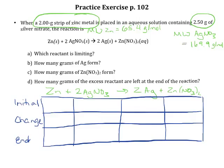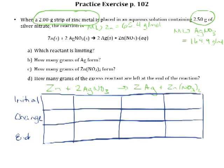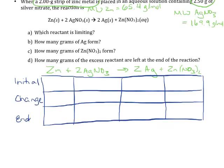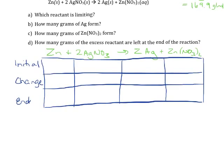Now we're ready to start filling in information, but remember that we cannot put grams in this ICE table. We have to put moles in because this is about mole ratios. So we're going to need to convert grams into moles. I know that I'm starting with 2.0 grams of zinc metal.